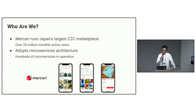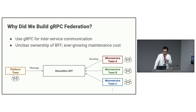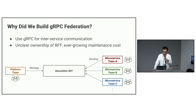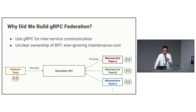Let me briefly introduce ourselves. Mercari runs the largest C2C marketplace in Japan with over 20 million MAUs. We adapted our microservice architecture early on, and we run hundreds of microservices in our environment. We use zRPC quite extensively for inter-service communication. As we have a number of microservices, we began developing a monolithic BFF to deliver optimized responses to clients. However, as more and more microservice teams made changes to the BFF, it grew rapidly, ownership became ambiguous, and the single platform team got overwhelmed by the maintenance costs.